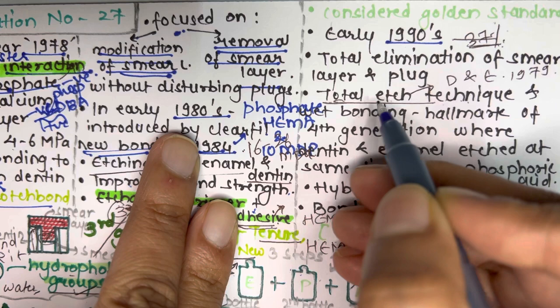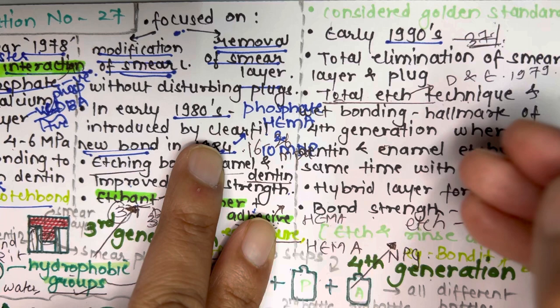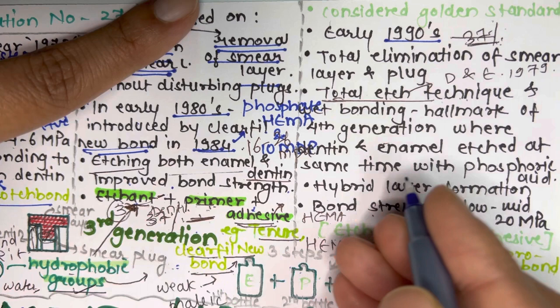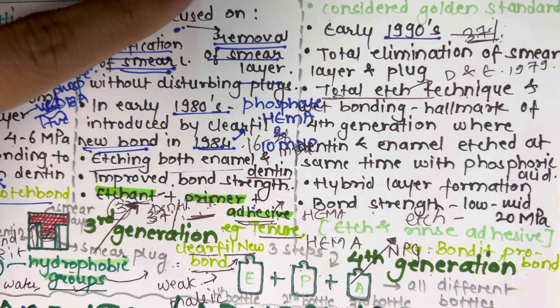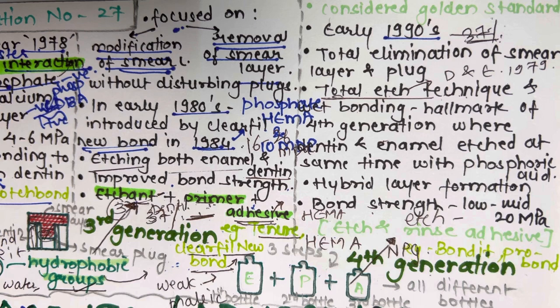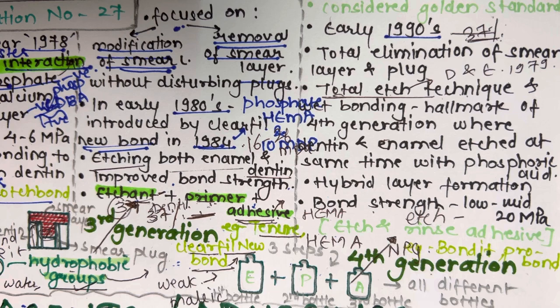In the total etch technique, unlike earlier generations where only enamel was etched, both enamel and dentine are etched with 37% phosphoric acid. This concept was given by Fusuyama in 1979. It was initially thought that etching dentine with strong acid would irritate the pulp, but studies showed that pulp irritation comes only from bacteria and their byproducts, not from the etchant or bonding agent. So in the fourth generation, dentine is also etched with 37% phosphoric acid.